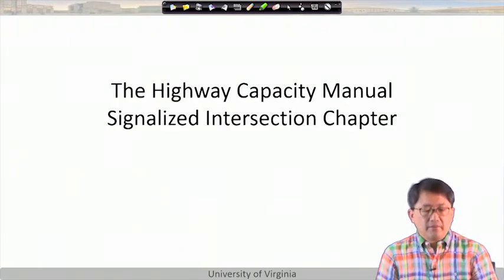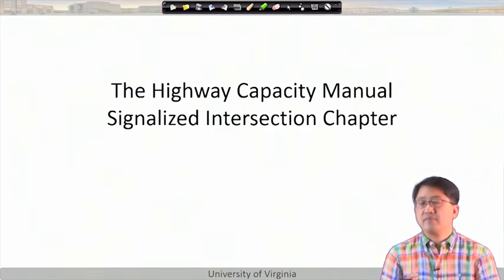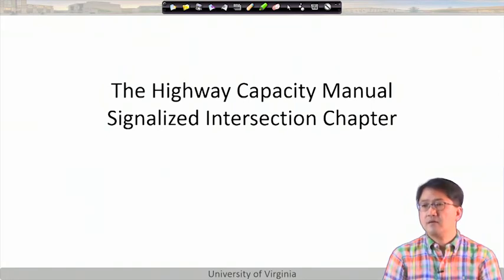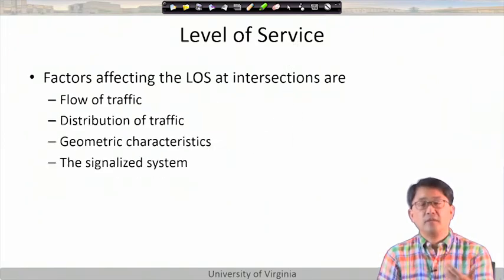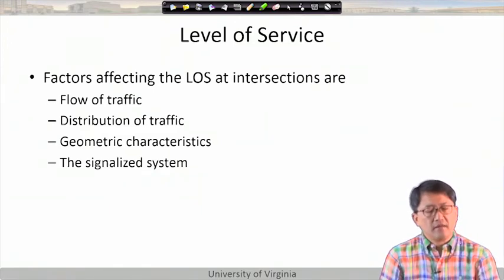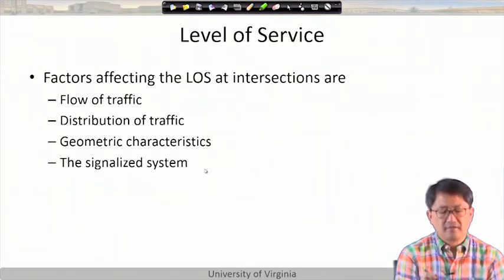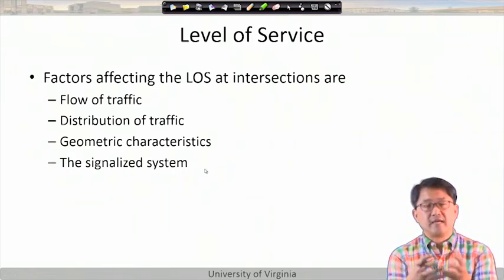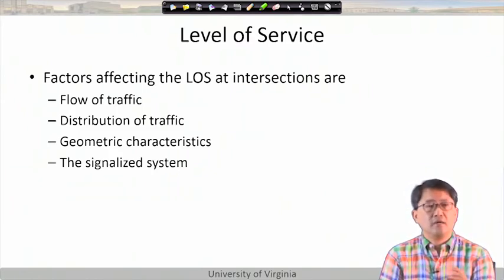The Highway Capacity Manual approach to signal control starts with level of service concepts. Factors affecting performance include number of vehicles, distribution, lane utilization, heavy vehicles, geometric conditions, and signal settings — cycle length and green times. Signal settings are fairly easy to update once you have a signal installed, making them a very cost-effective way to improve mobility.